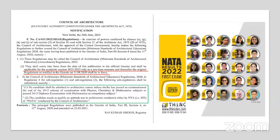Another important point that has been added is that the candidate needs to qualify an aptitude test in architecture, conducted either by NTA — the National Testing Agency — which is the JEE examination, specifically the JEE Paper 2 examination exclusively for architecture, or the AAT (Architecture Aptitude Test), or the IAT examination, as well as the NATA examination conducted by the Council of Architecture. The student needs to qualify in any of these examinations in order to get admitted into architecture courses.